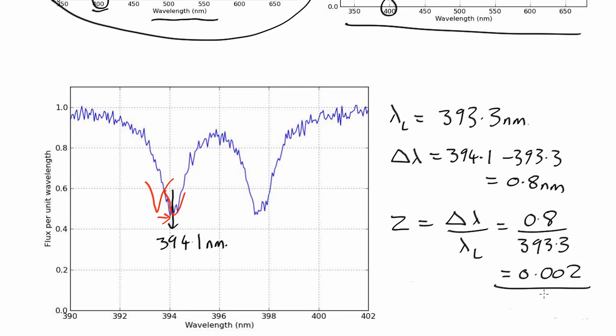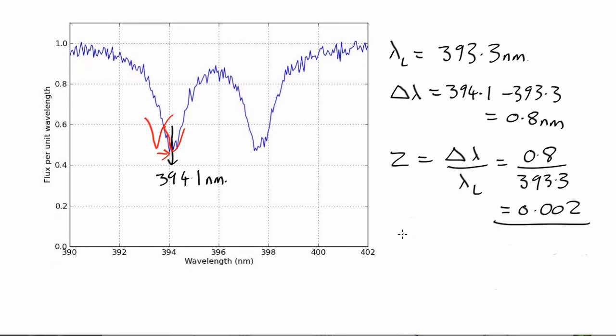Using the Doppler effect equation, we can work out what speed this corresponds to. Now the velocity is equal to the redshift times the speed of light. So that's 0.002 times 300,000 kilometers per second, which is 600 kilometers per second.